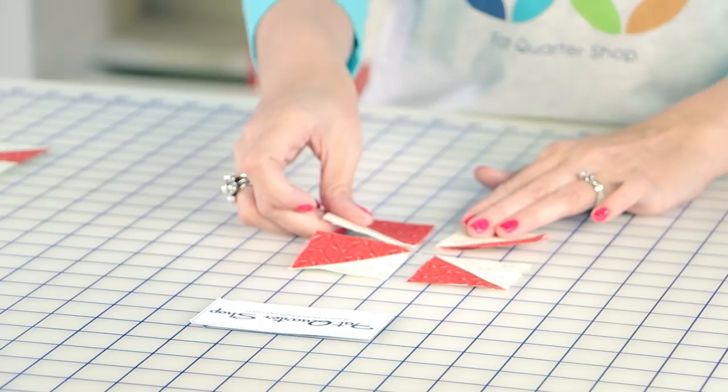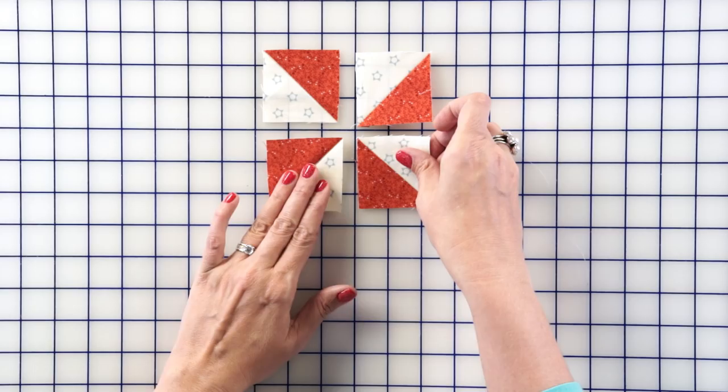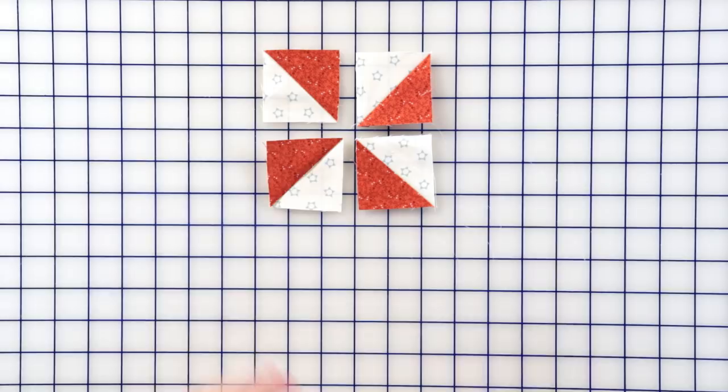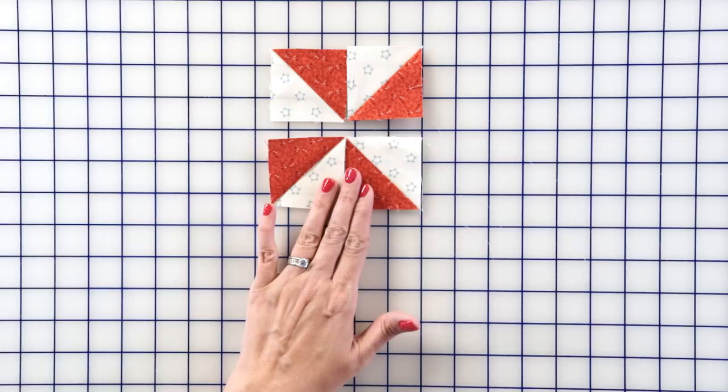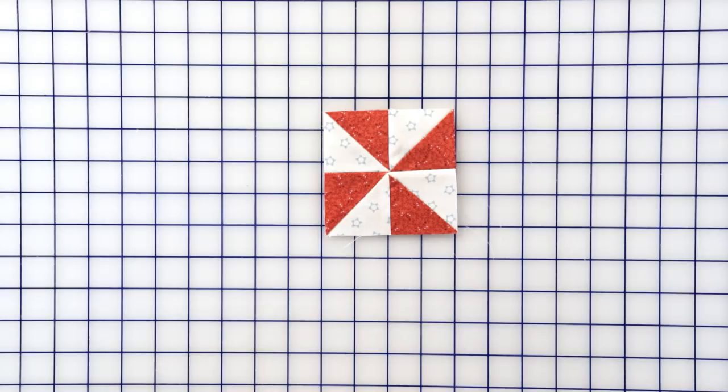Now it's time to just wrap it all up. Just put all your units together, paying attention to how it lays. You've pressed towards your red, so all your seams are going to nest. You're going to put these two together and press, then put that row together, and you're going to have your center pinwheel unit.